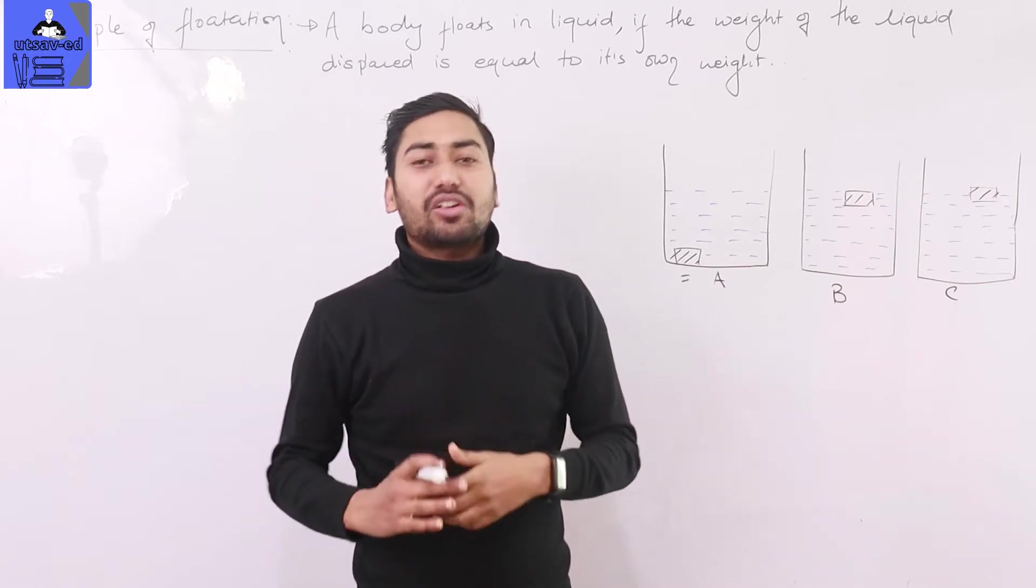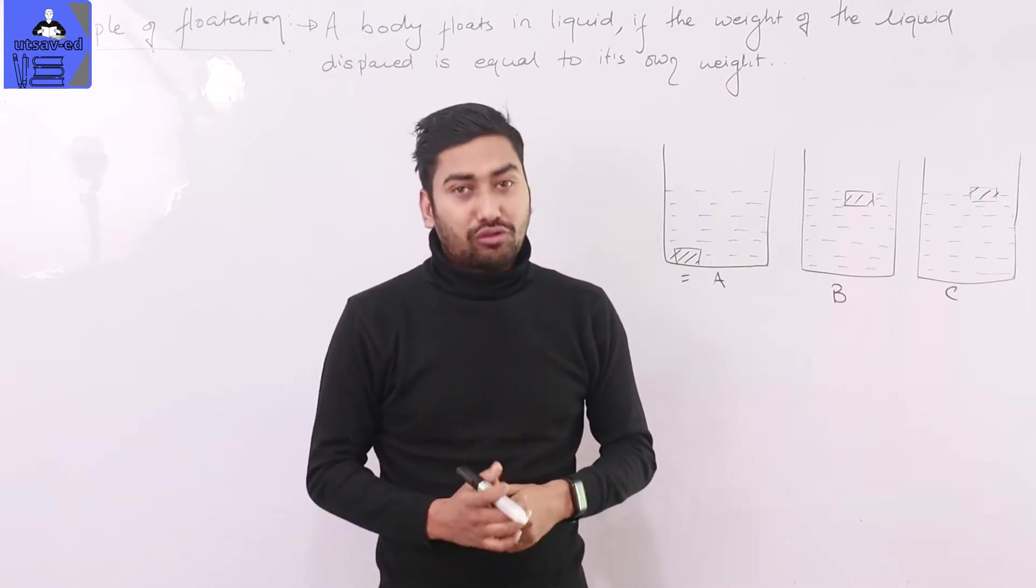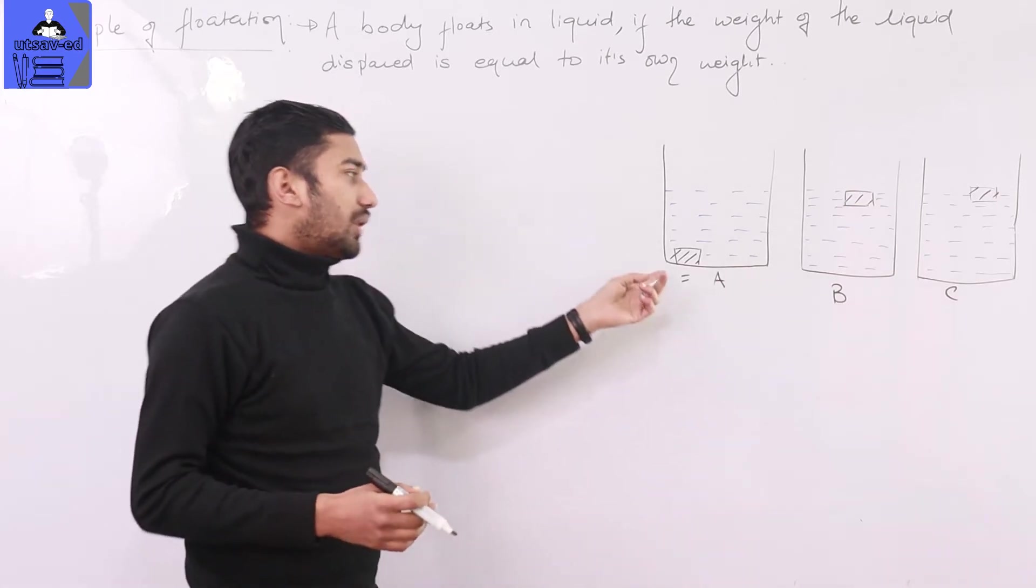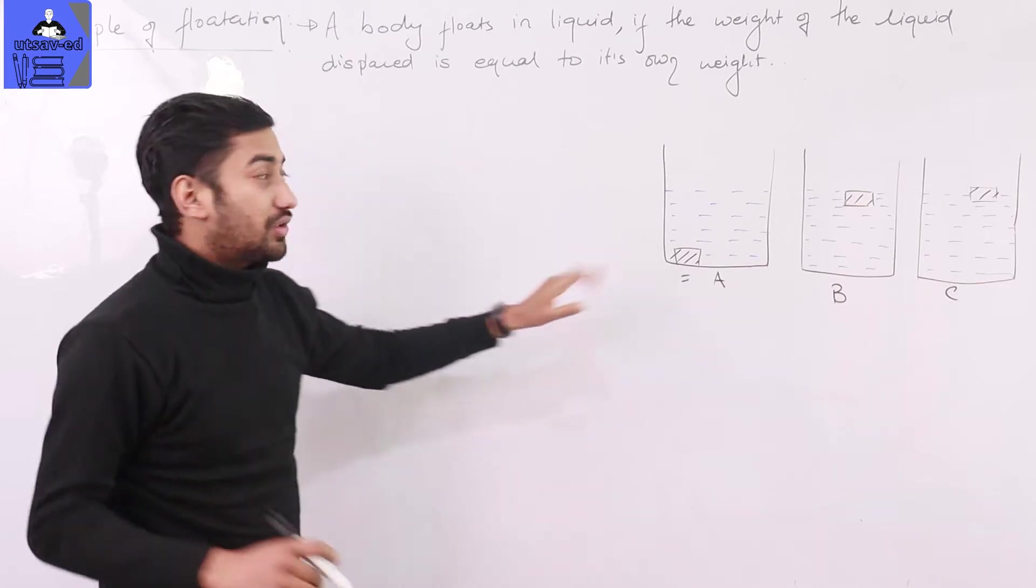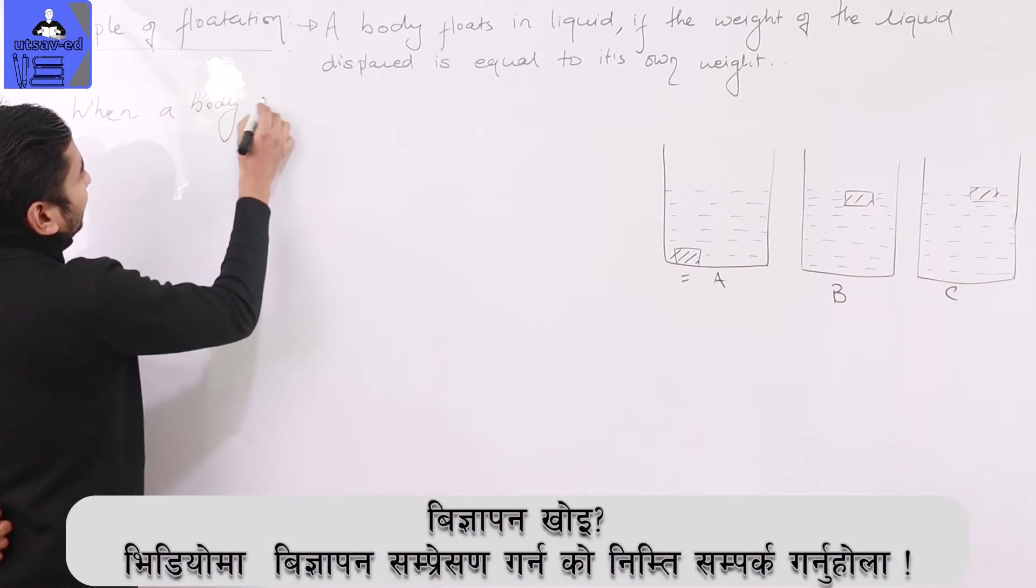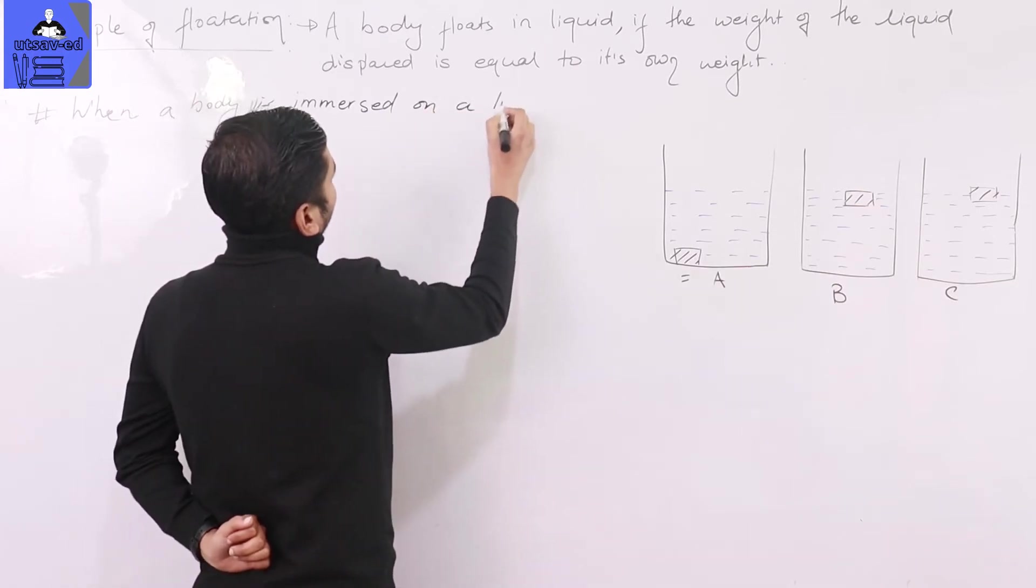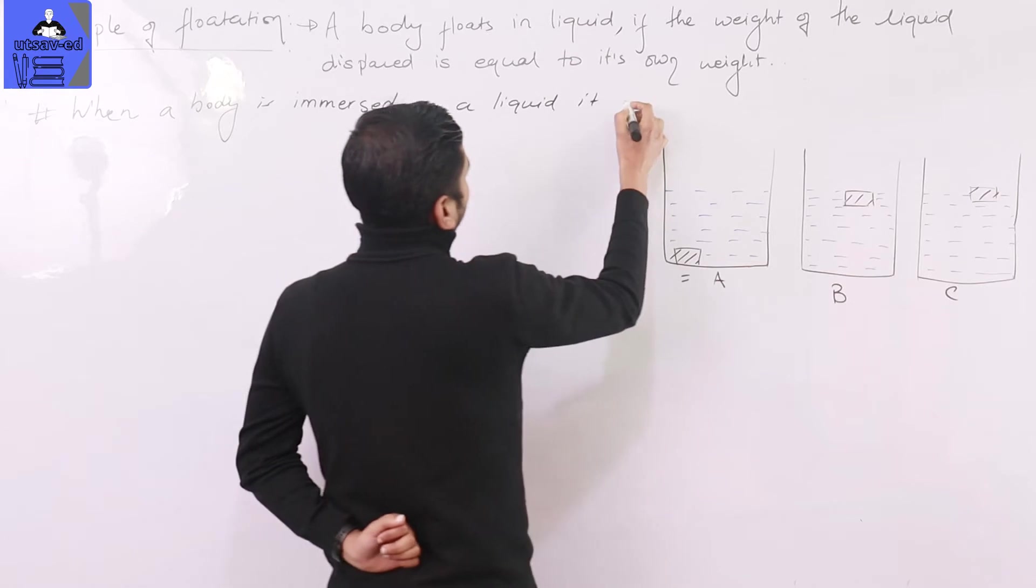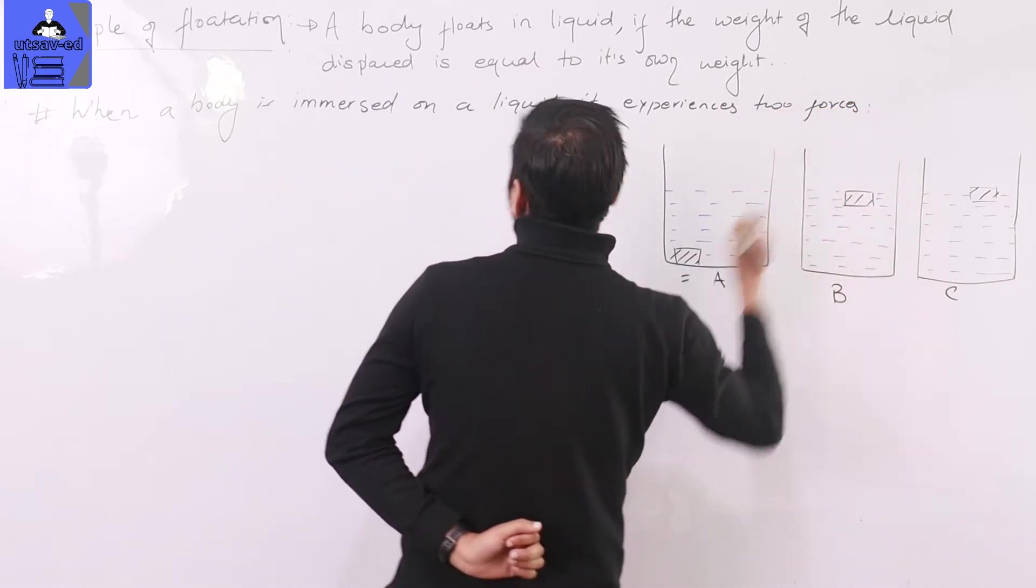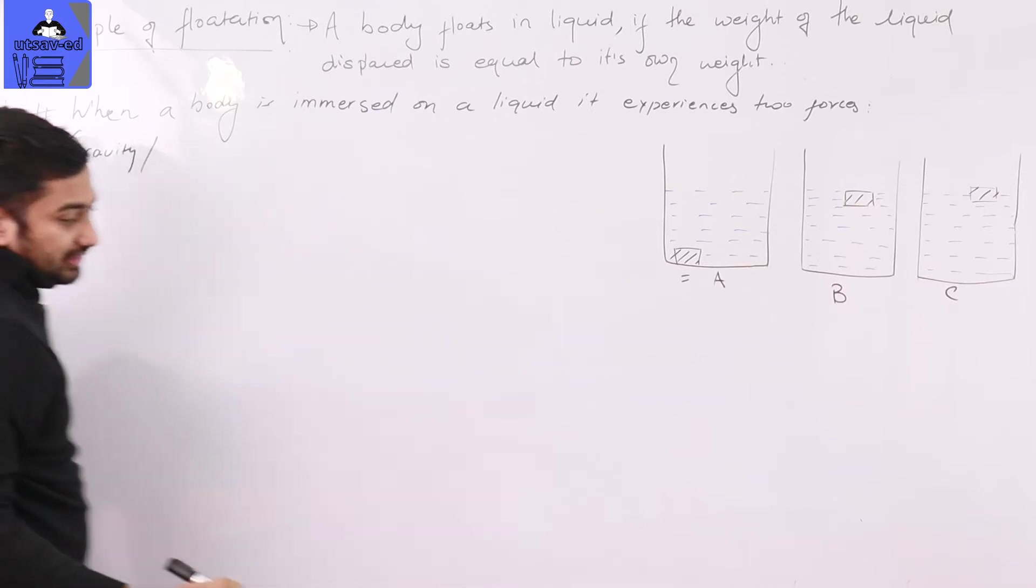When a body is immersed in a liquid, it experiences two forces. First is gravity or weight of the body pulling downward. Second is upthrust from Archimedes' principle pushing upward. The upthrust equals mass times acceleration due to gravity.